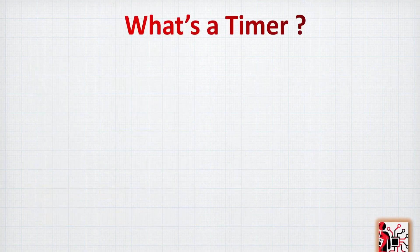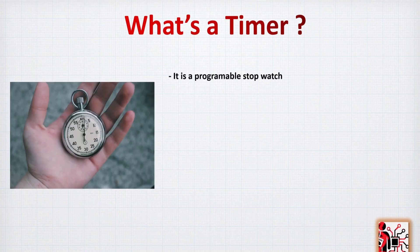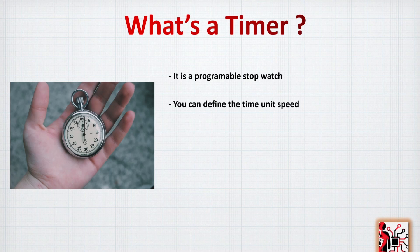What's a timer? A timer is a kind of programmable, or maybe a smart stopwatch. This timer that we have inside our microcontroller is quite a very good thing. You can define the time unit speed or the step. It can be microsecond, millisecond, maybe not second because we will explain it later on. But you can have the division that you want, and this is extremely interesting.